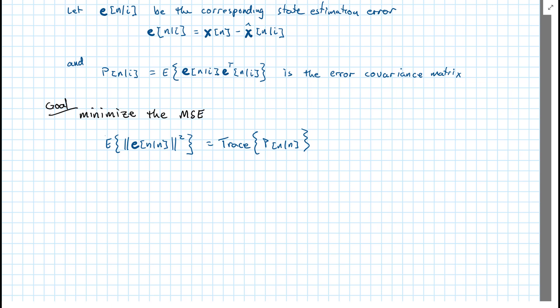So the norm of e n given n squared is going to be the sum of the squares of each of the elements in e. Well that actually shows up in P, our covariance matrix, along the diagonal. So if we take the trace of P of n, it's exactly equal to the expected value of the norm of e n squared.